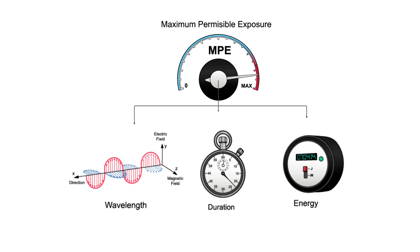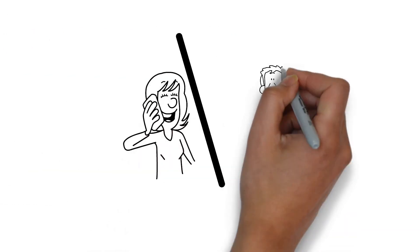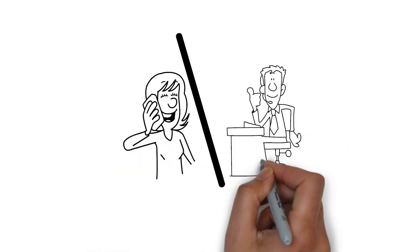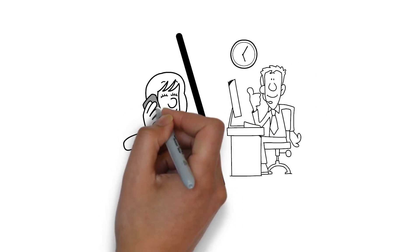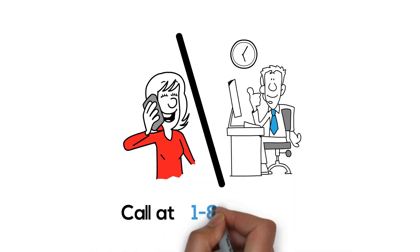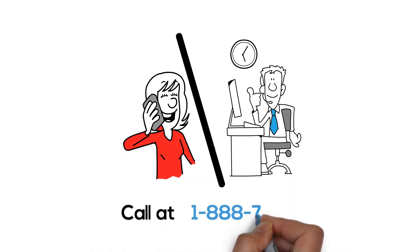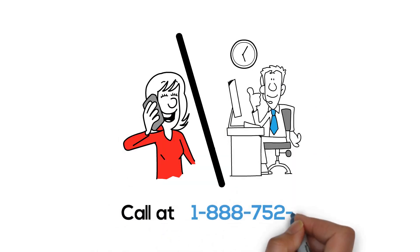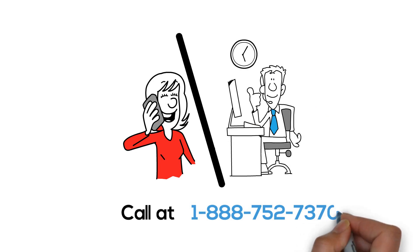To determine what protection level is needed, premised on your laser's output, do this by looking for the recommended optical density, or OD, asking your laser safety officer, or feel free to give us a call at 1-888-752-7370 and we can assist.